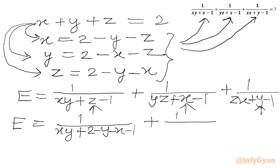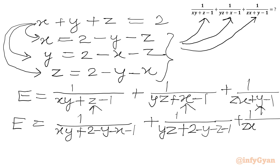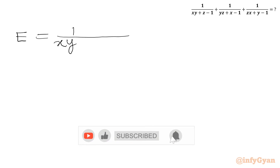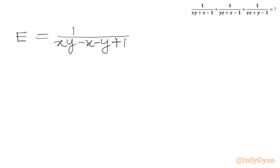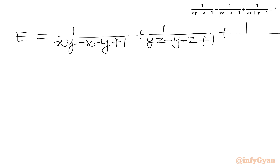Then we write 1 over yz, and in place of x we write 2 minus y minus z, minus 1. Plus 1 over zx, and in place of y we write 2 minus x minus z, minus 1. Now 2 minus 1 is plus 1, so we can write E equal to 1 over xy minus x minus y plus 1. Similarly, for the second term: 1 over yz minus y minus z plus 1. And for the third: 1 over zx minus z minus x plus 1.